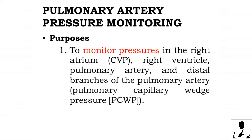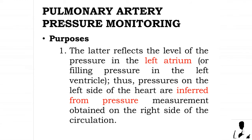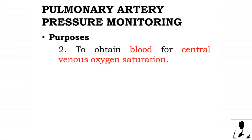Pulmonary artery pressure monitoring purposes include: to monitor pressures in the right atrium (central venous pressure), right ventricle, pulmonary artery, and distal branches of the pulmonary artery including pulmonary capillary wedge pressure. The pulmonary capillary wedge pressure reflects the level of pressure in the left atrium or filling pressure in the left ventricle, so pressures on the left side of the heart are inferred from pressure measurements obtained on the right side of the circulation. It is also used to obtain blood for central venous oxygen saturation.